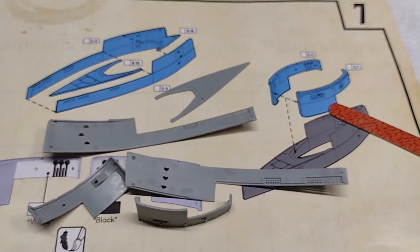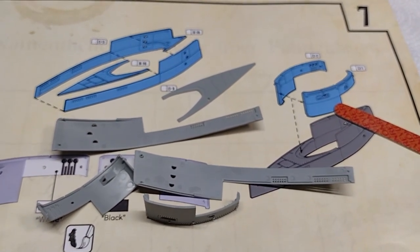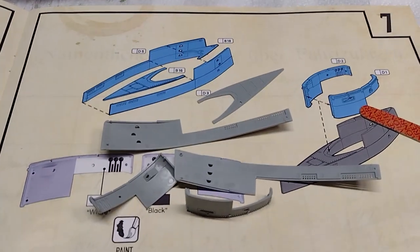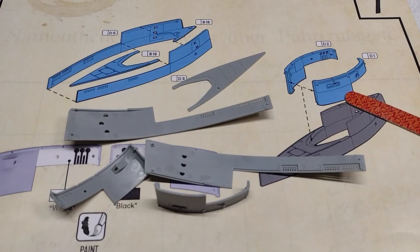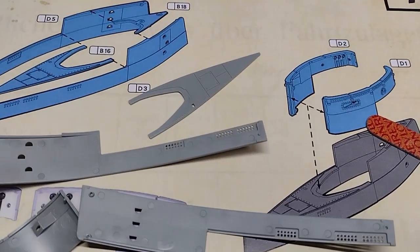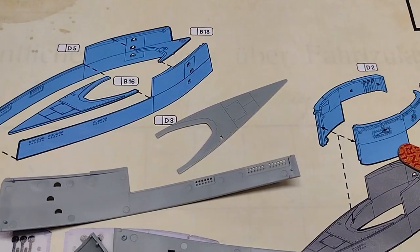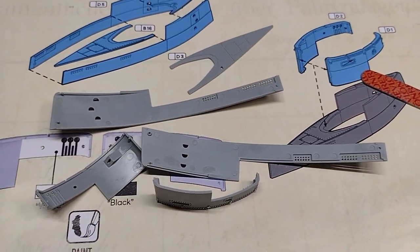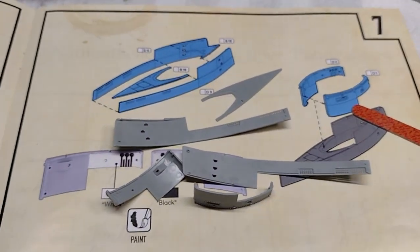Now the conning tower is made up of, according to this step, four parts, and there's a couple of decks that go on it. So in this particular step, I'm just going to do these four parts.